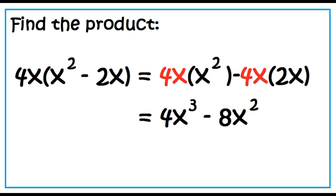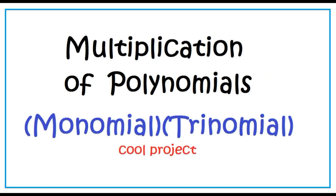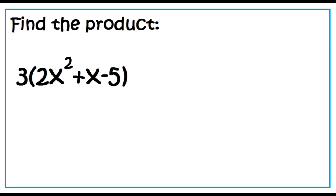Now let's multiply a monomial and a trinomial. Find the product of 3 and the quantity 2X squared plus X minus 5.